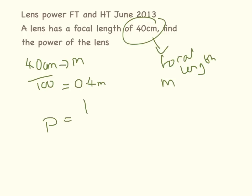So power equals 1 divided by 0.4. So the power of this lens is going to be 2.5 diopteras.